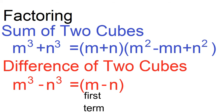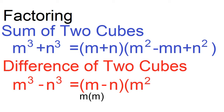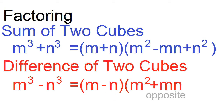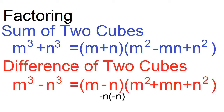Let m be the first term and negative n be the second term. Use this factor to find the other factor. Square the first term: m times m is m squared. Multiply the first term and the second term: m times negative n is negative mn. Write the opposite: plus mn. Then square the second term: negative n times negative n is n squared. The factors are the quantity m minus n and the quantity m squared plus mn plus n squared.